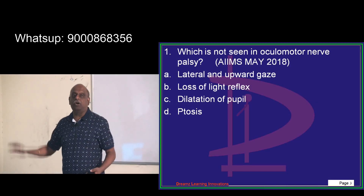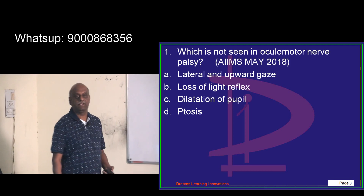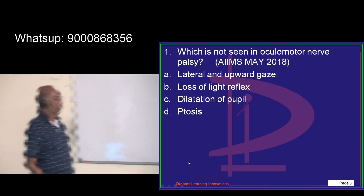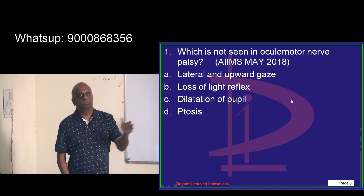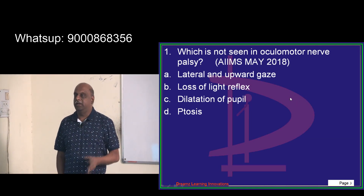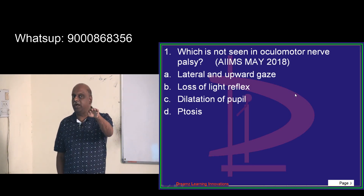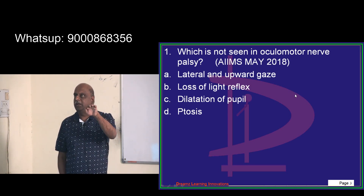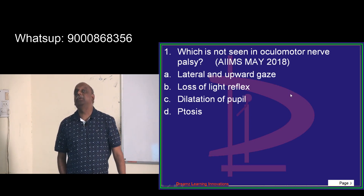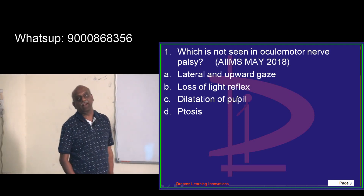The question from AIIMS May 2018 was: which is not seen in oculomotor nerve palsy? For the light reflex, you require the sphincter pupillae to constrict because of the oculomotor nerve fibers leading to miosis when you throw light into the eye. So the light reflex will get affected.